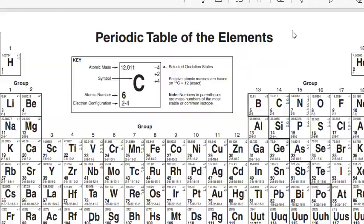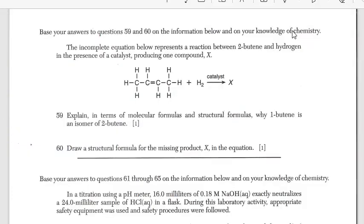Let's take a look at questions 59 and 60. We have a reaction between 2-butene and hydrogen in the presence of a catalyst, and we end up with one compound represented with the letter X. Question 59 asks, explain in terms of molecular formulas and structural formulas, why 1-butene is an isomer of 2-butene. The 1 and the 2 just tell us where the carbon-carbon double bond starts. That's the only difference. The molecular formulas are going to be exactly the same, but the structural formulas are different because 2-butene has the carbon-carbon double bond starting on the second carbon, and 1-butene would have it starting on the first carbon. Molecular formulas are the same, structural formulas are different.